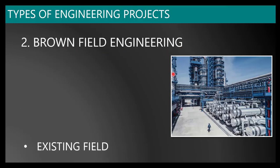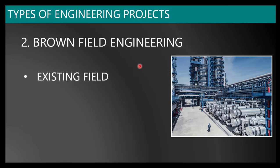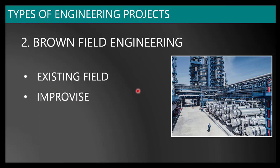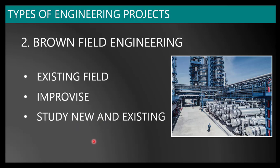The second type is brownfield engineering. Brownfield engineering is applied in an existing field. If you have an existing field and want to do anything within it, brownfield engineering strategies are applied. This is basically to improvise the existing field — if you want to increase production or carry out de-bottlenecking to increase plant capacity, brownfield engineering is used. It requires a study of both the existing and the new, because you are going to install something new into the existing field.